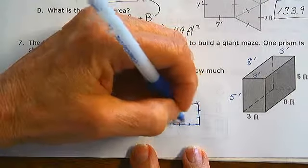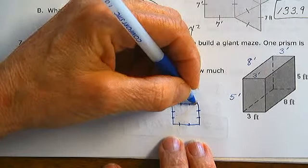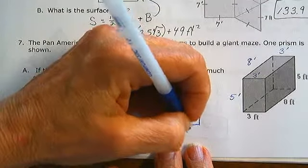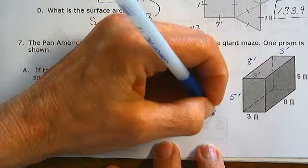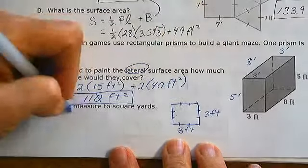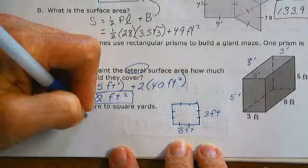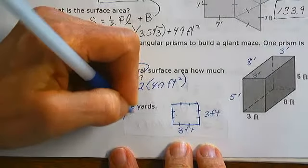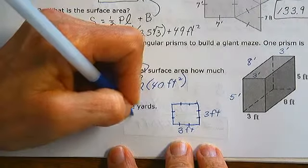The surface area of a square yard is 3 feet times 3 feet. 3 times 3 is 9. So 1 square yard equals 9 square feet.